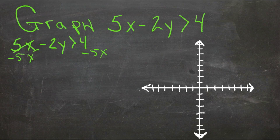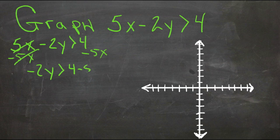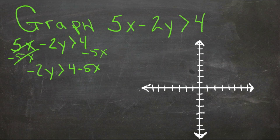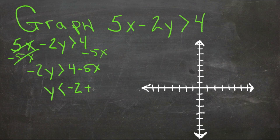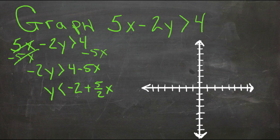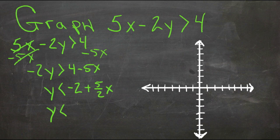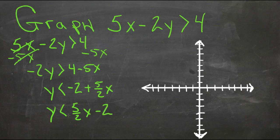The 5x cancels. Negative 2y is greater than 4 minus 5x. Divide everything by negative 2, and don't forget: when we divide by a negative, if we're using an inequality, we have to switch the sign. So our y will be less than negative 2 plus 5 halves x. We'll rewrite the order of this so we have mx plus b, and we'll have y is less than 5 halves x minus 2.